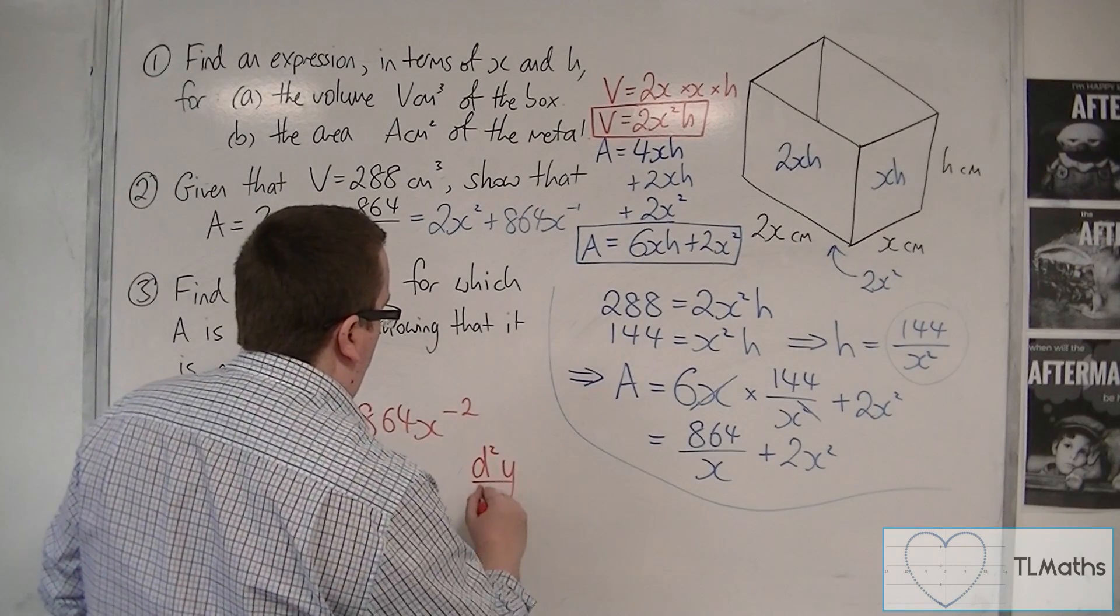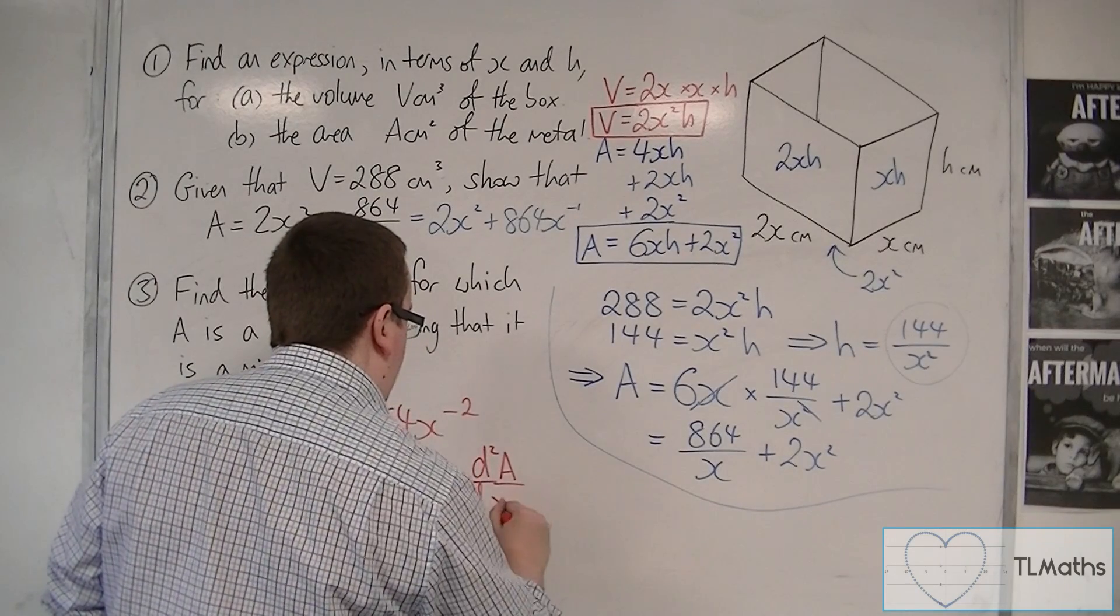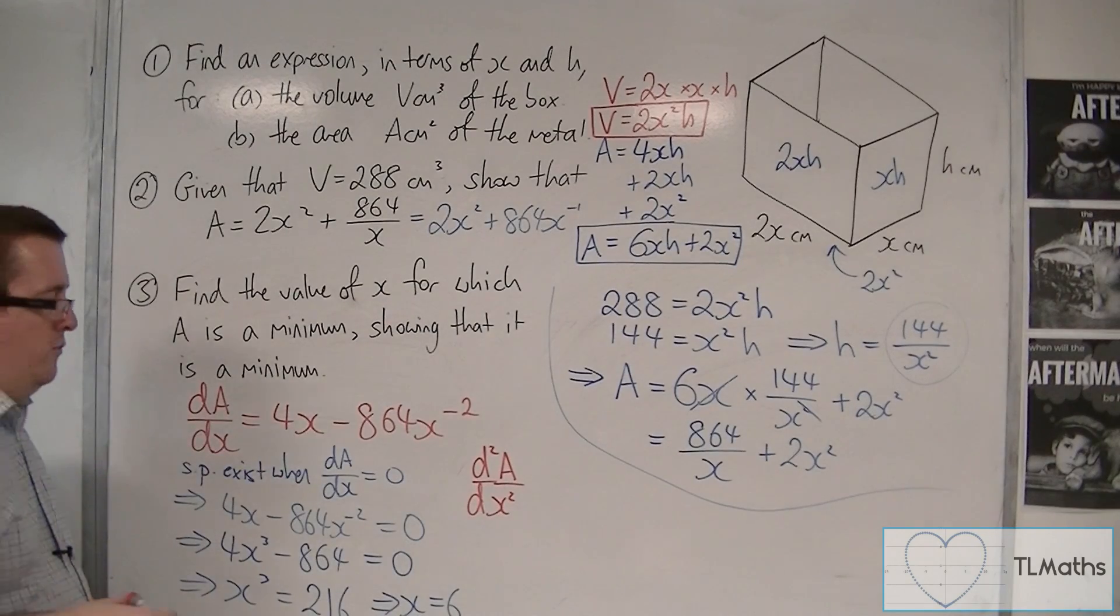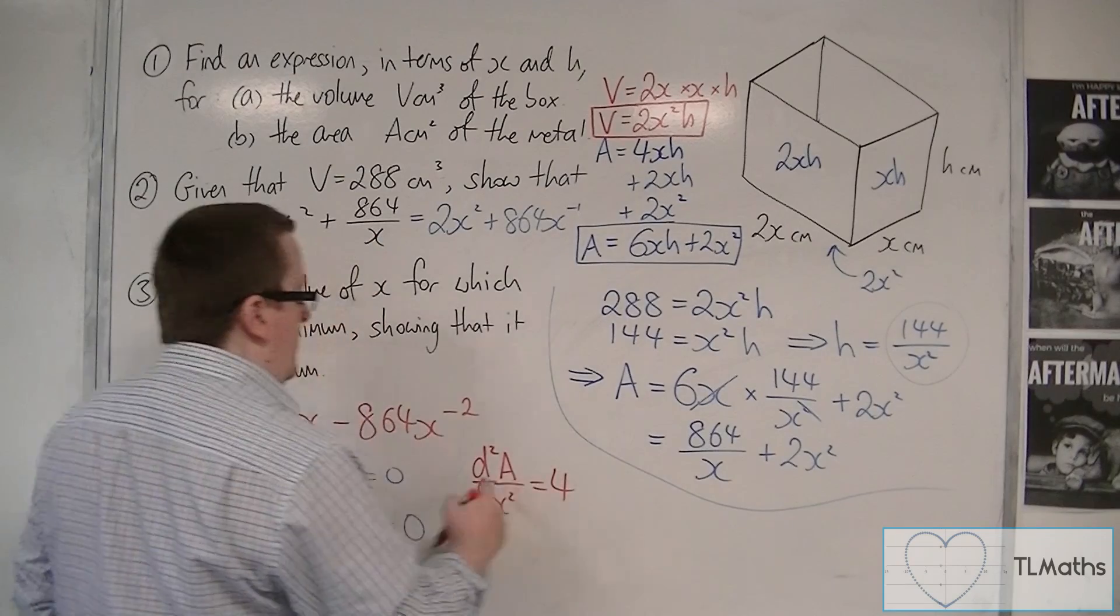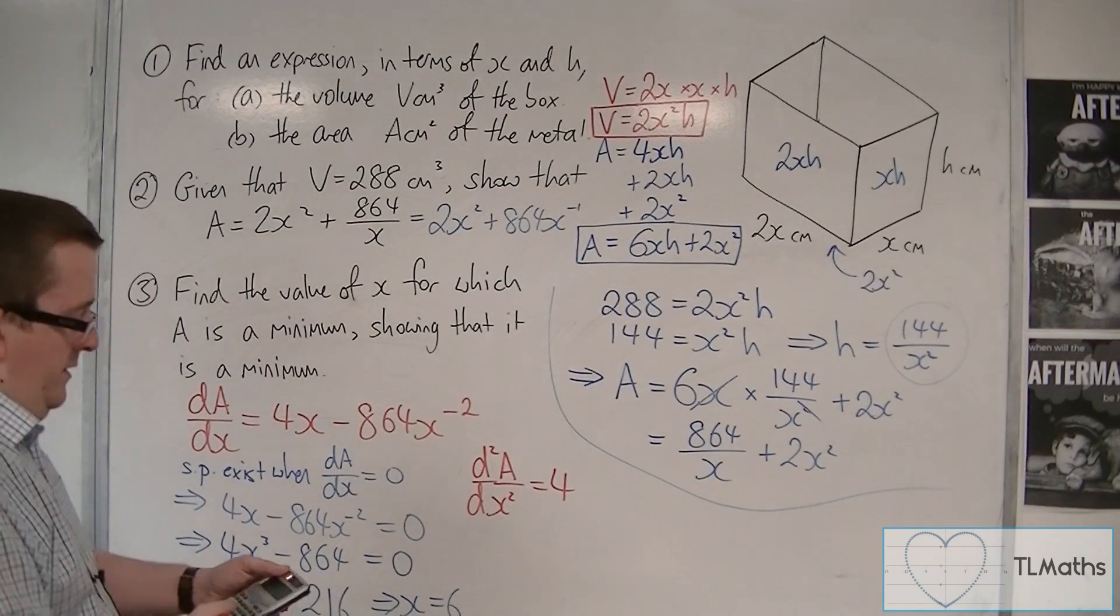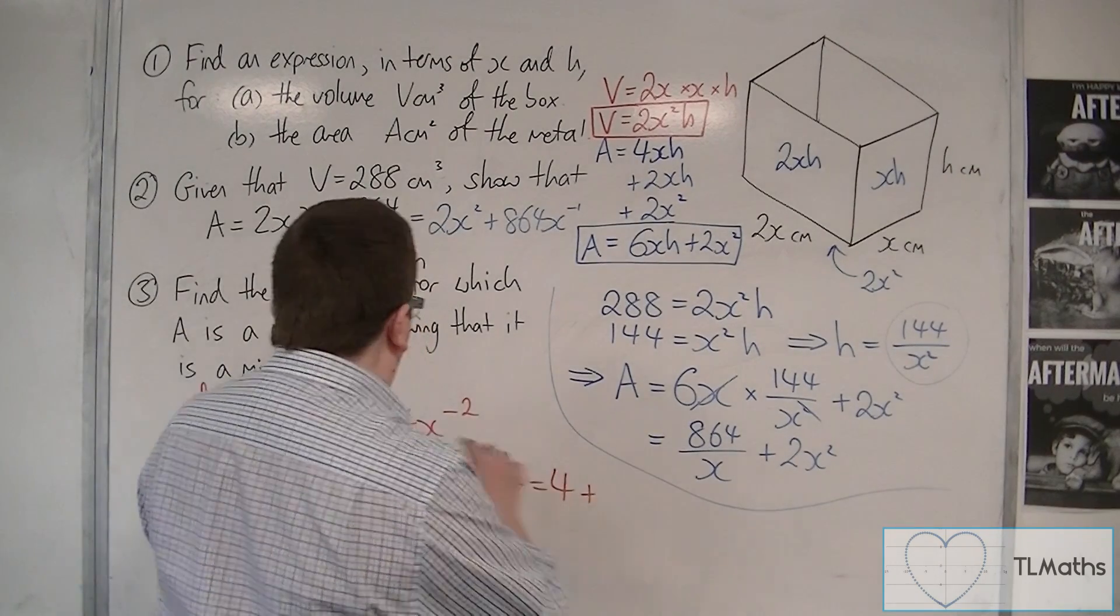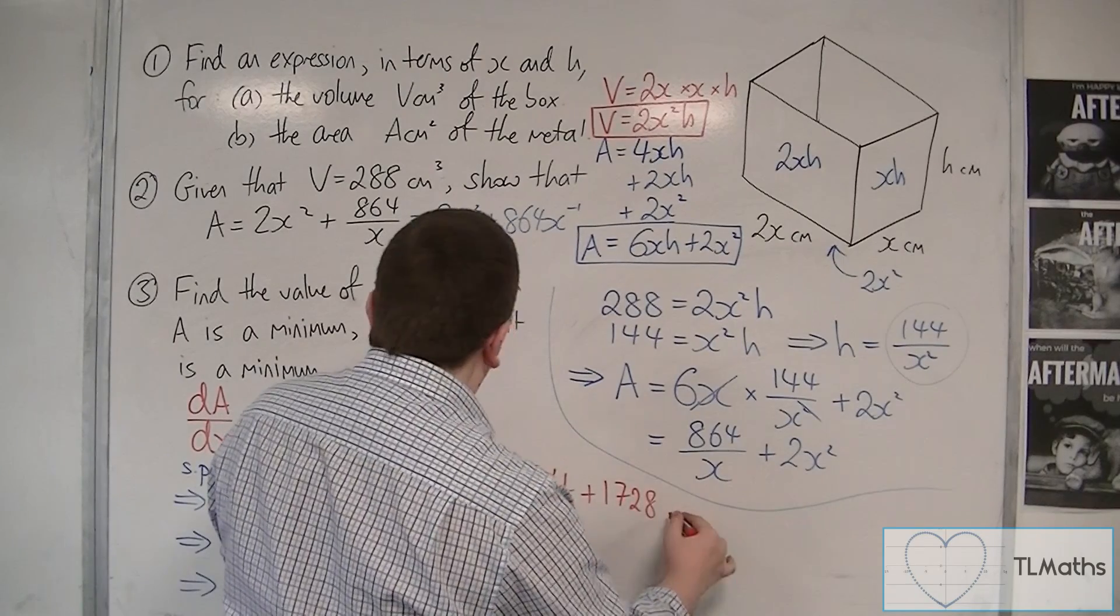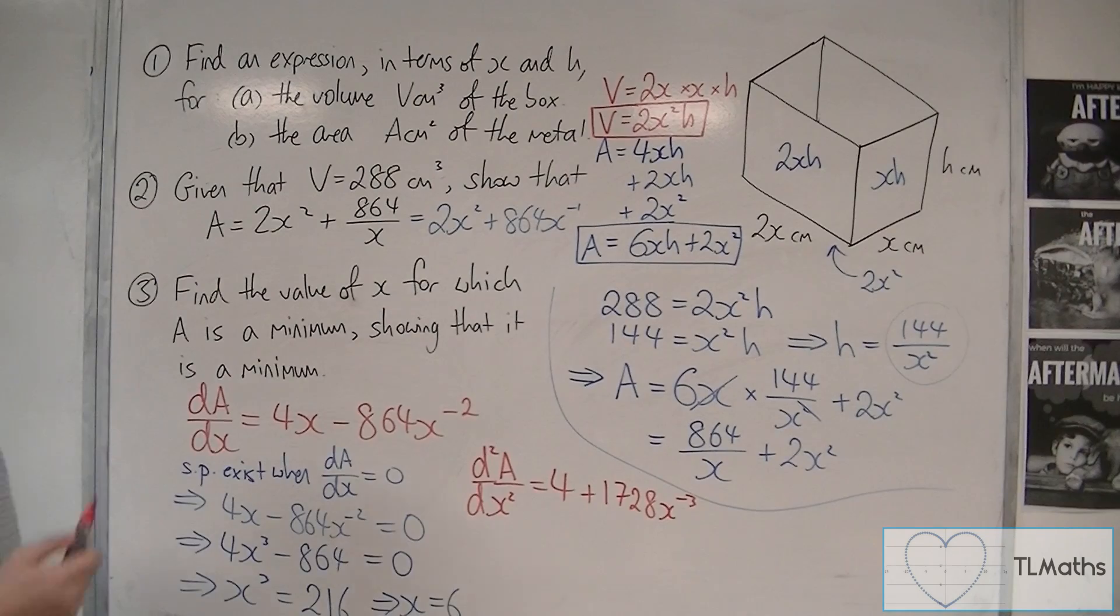So, I need to find the second derivative. d²A by dx squared. We've got to keep our notation the same all the way through. So, 4x differentiates to 4. The power comes down to the front. So, we're going to get 2 lots of 864. And we're going to have plus now, because it's minus times a minus. So, 1728. And then take 1 off the power.